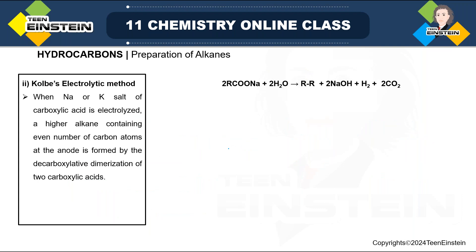The second method using carboxylic acid as starting material is Kolbe's electrolytic method. The reaction is performed in an electrolytic cell with reactions at both cathode and anode. The actual starting material is the sodium or potassium salt of the acid. Two molecules of the salt react with two molecules of H₂O. The two R groups, one from each carboxylate, combine to form R-R (a higher alkane), while NaOH, H₂, and CO₂ are byproducts.